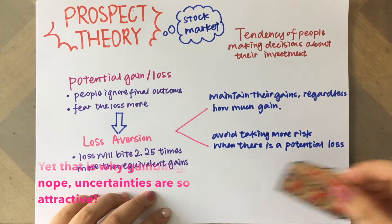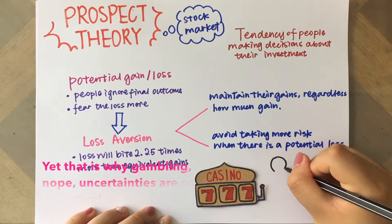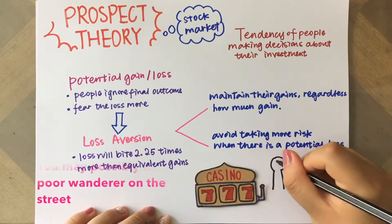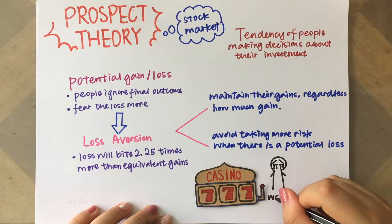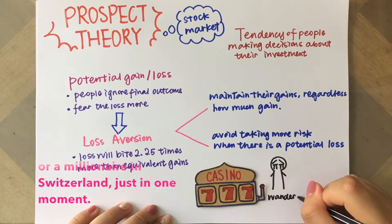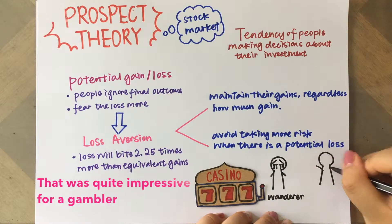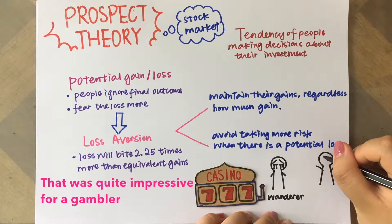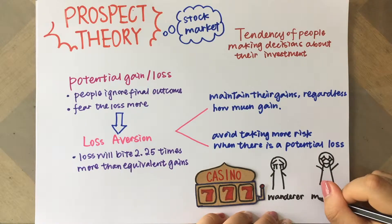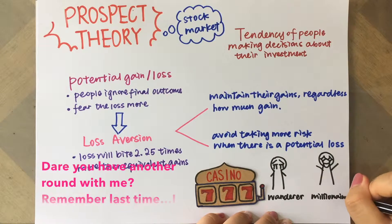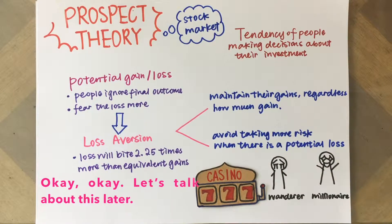That is why gambling and uncertainties are so attractive — you may possibly be a poor wanderer on the street, or a millionaire in Switzerland, just in one moment. That was quite impressive for a gambler who never gets to win one millionaire game. Do you want another round with me, you remember last time? Okay, okay, let's talk about this later.